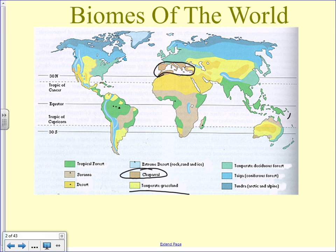Temperate grasslands — we typically call those prairie. That's where we live. There's a lot of prairie in the central part of North America, and quite a bit of Central Asia is also prairie. They call it steppe there — places like Mongolia would be like prairie areas.